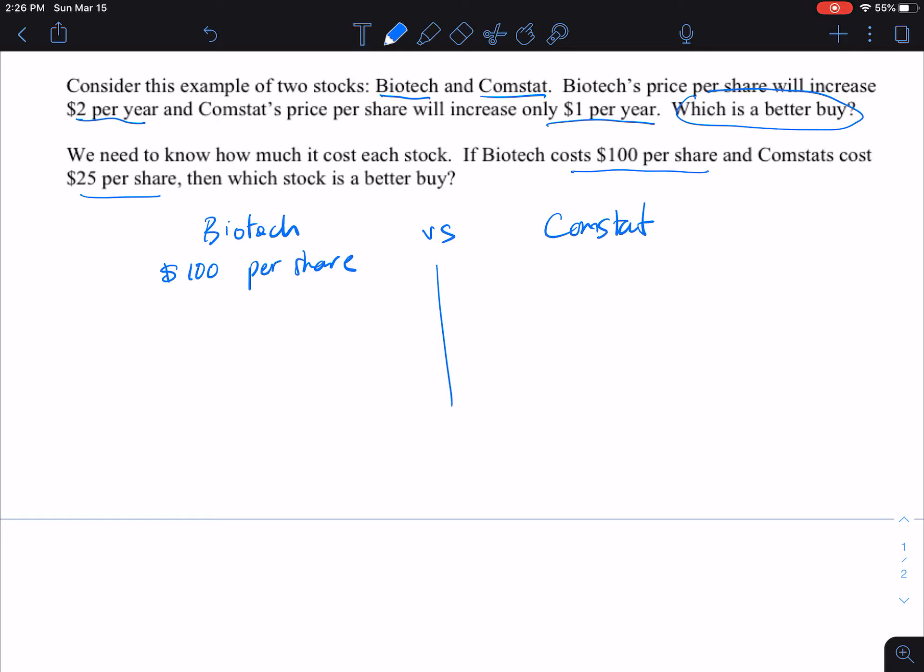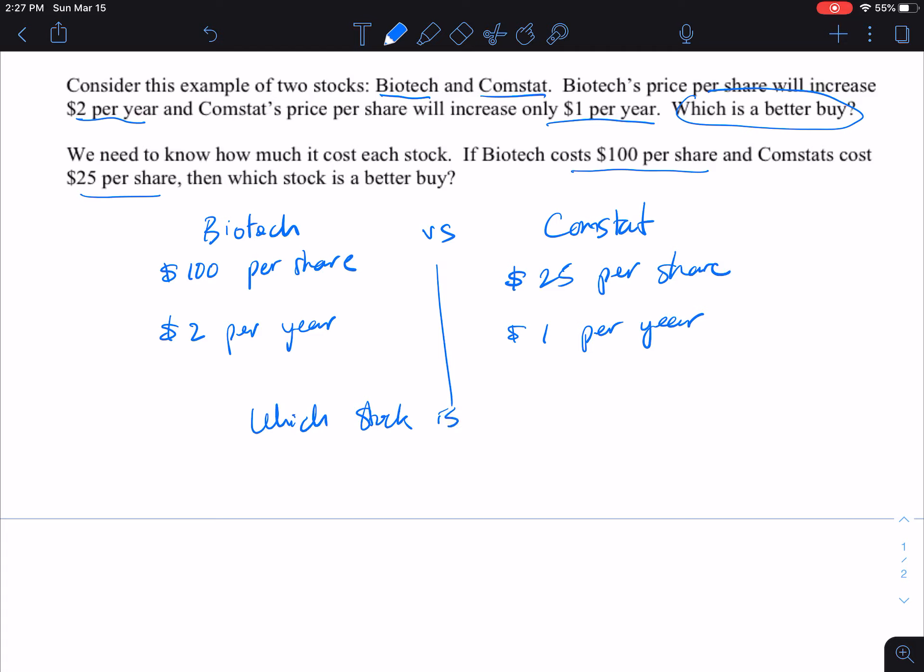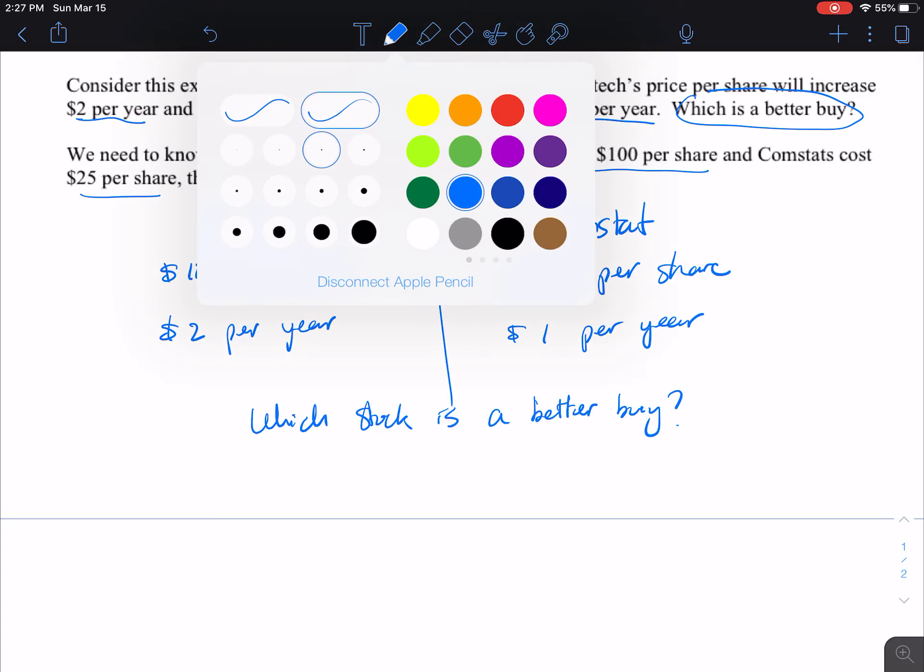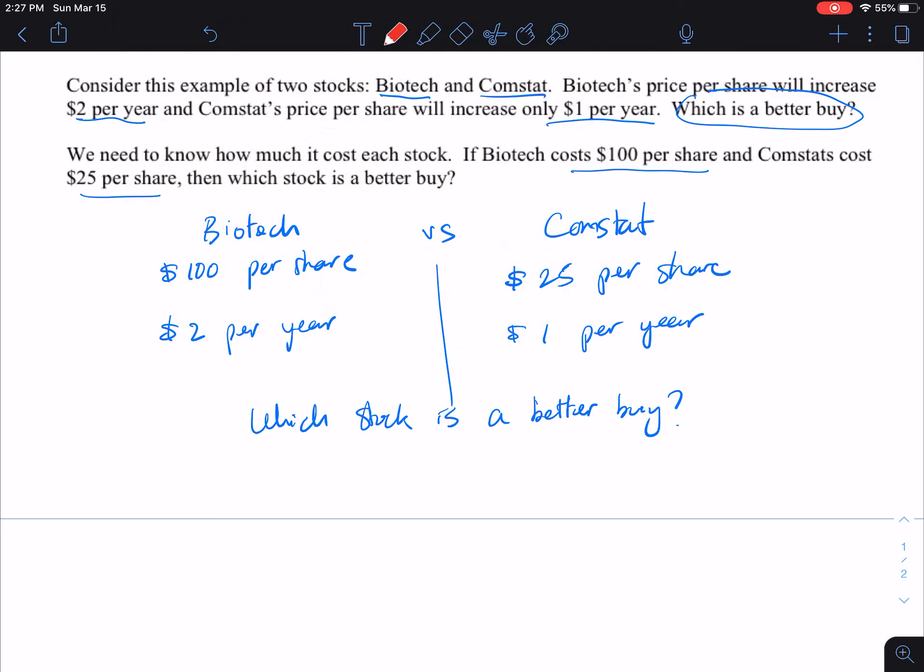We have Biotech at $100 per share and Comstat is $25 per share. Biotech's share will increase by $2 per year and Comstat is by $1 per year. Which stock is a better buy? If you look at the rate of increase of your stock, this one increases $2 per year, this is $1 per year. If we spend $100 for Biotech, at the end of each year we gain $2 of profit.